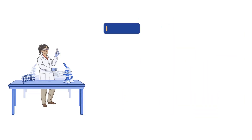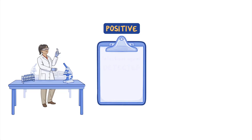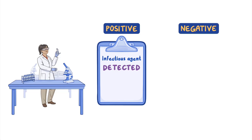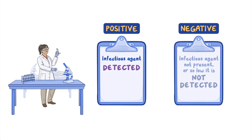A test result is called positive if either genetic material or antigens for a specific infectious agent are detected. A negative test result can mean that the infectious agent is not present in the sample, or the amount of infectious agent is too low to be detected by the test.